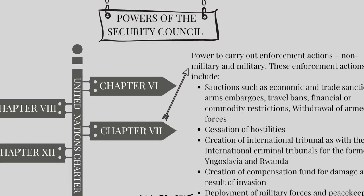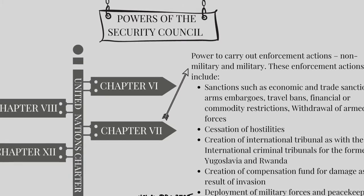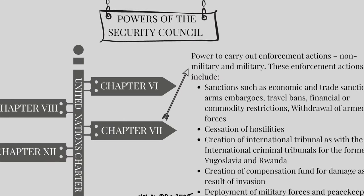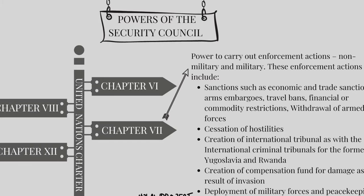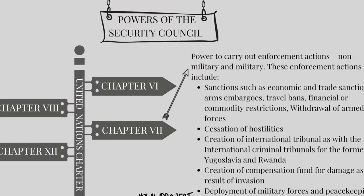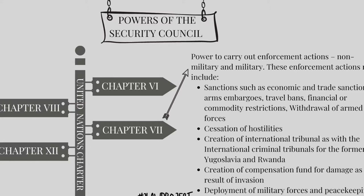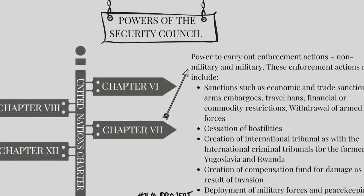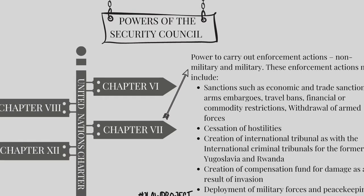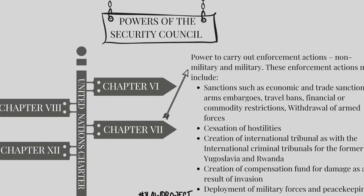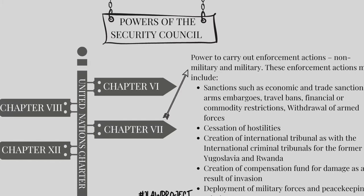And Chapter 12 covers its role in exercising trusteeship functions. One example of the powers derived by the Security Council is its enforcement power encapsulated in Chapter 7 of the United Nations Charter. These powers are extensive. Chapter 7 specifically provides the framework within which the Security Council may take enforcement actions, both military and non-military.